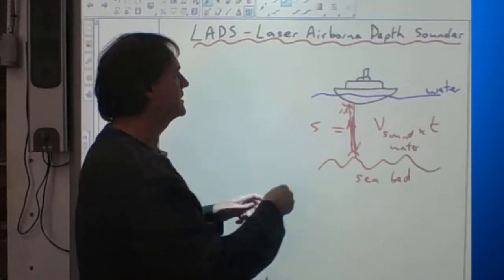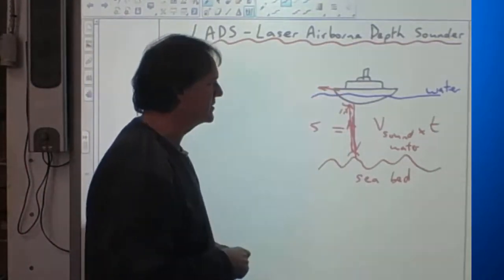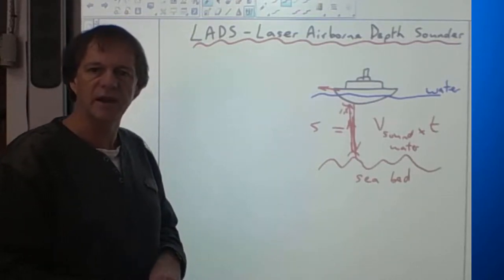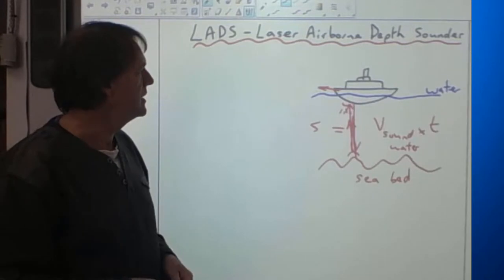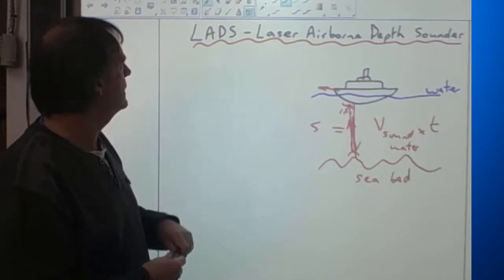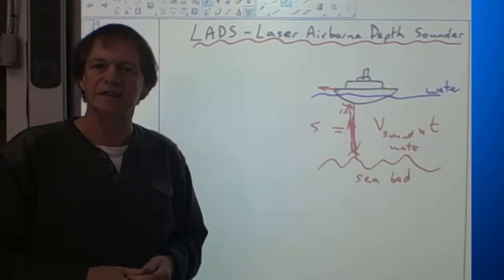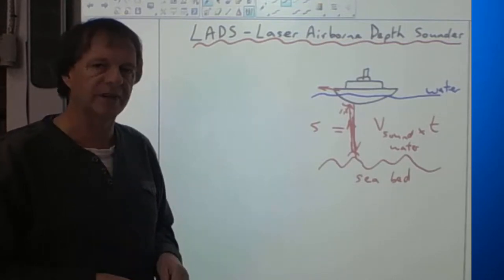Trouble with this is the boats are fairly slow, and sound is fairly slow through the water. So it's going to take a long time to actually map just the coastal regions around Australia to check for the shipping lanes. So another way of doing this was developed here with LADS, to use a plane which shoots down a laser beam and does a similar sort of job.